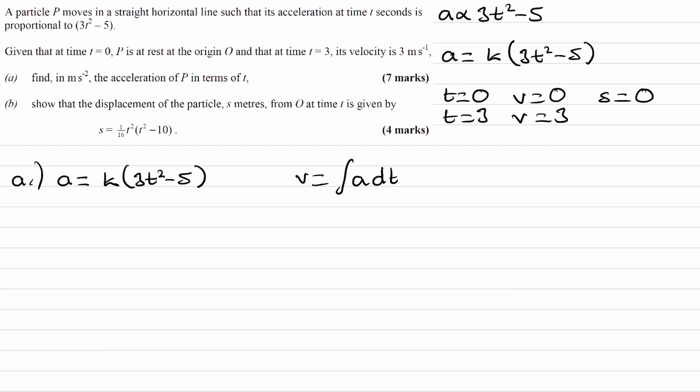Okay, so velocity is the integral of k times 3t squared minus 5 with respect to t. And the k just stays in front. It's a constant multiplied by the whole thing, so that just stays in front. The 3t squared integrates to make t cubed, and the minus 5 integrates to make minus 5t. And then we will have a plus c, because this is an indefinite integral, so we will have to have an integration constant.